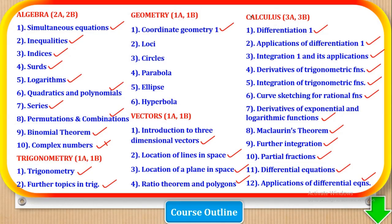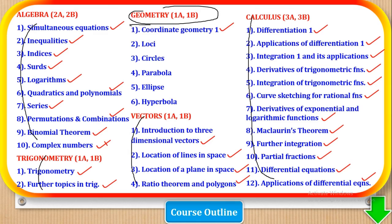The ones which are ticked are available on this platform. The entire Calculus is available. Vectors is available. Trigonometry is available. Complex numbers — sorry, the Algebra is available. And now we are dealing with Geometry. In this video, we are going to go through the topic of Coordinate Geometry 1.